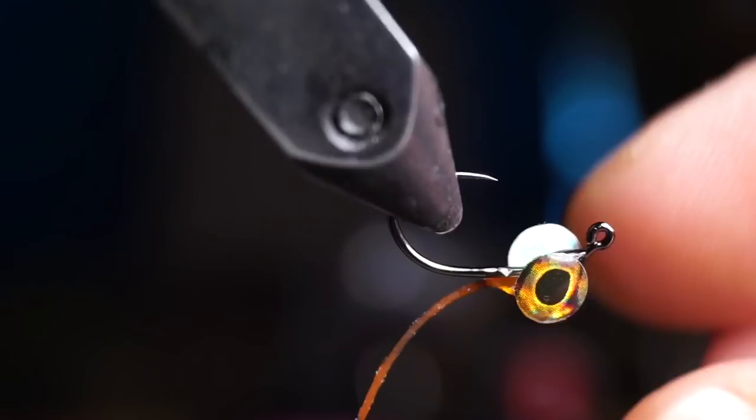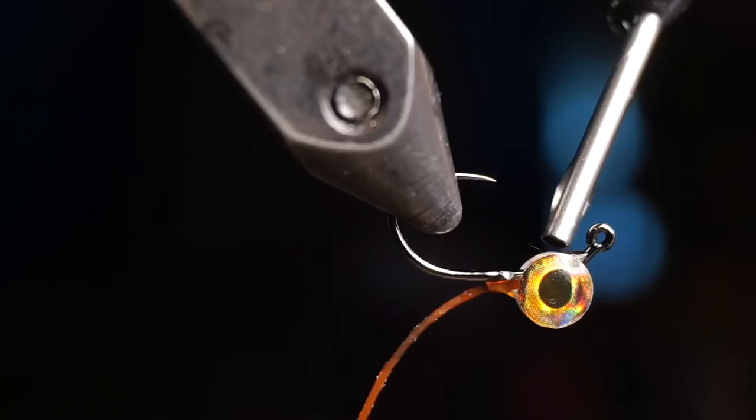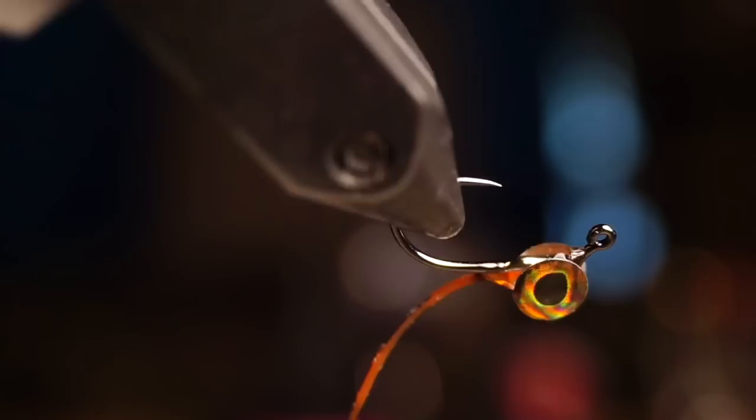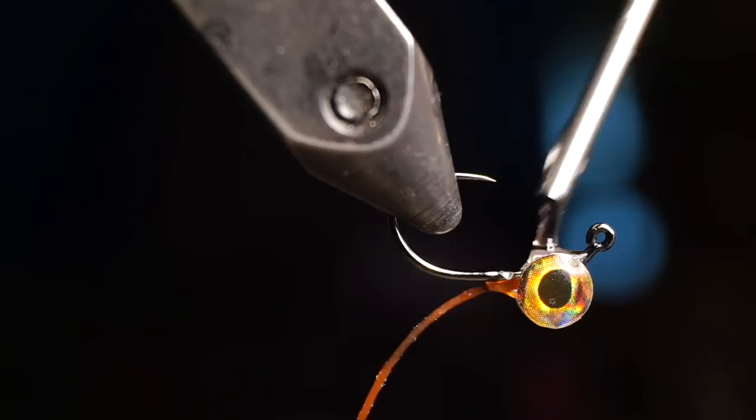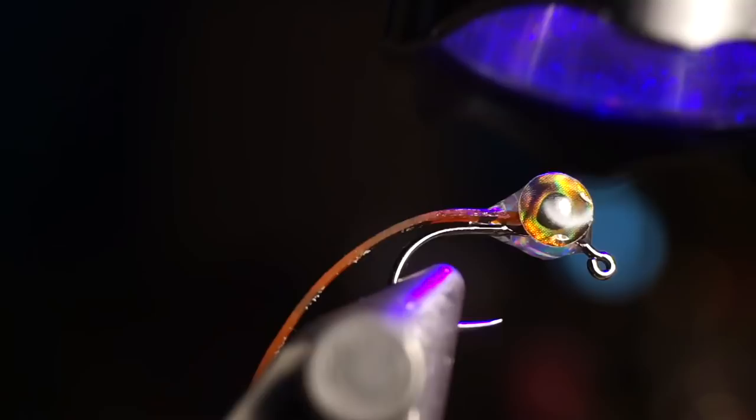Now, it can be tricky to get them placed correctly, but once you're happy with the placement, then put a drop of thin hard formula between the eyes and cure them like so. Then turn the fly upside down and put another drop in between the eyes on the bottom and cure that hard as well.